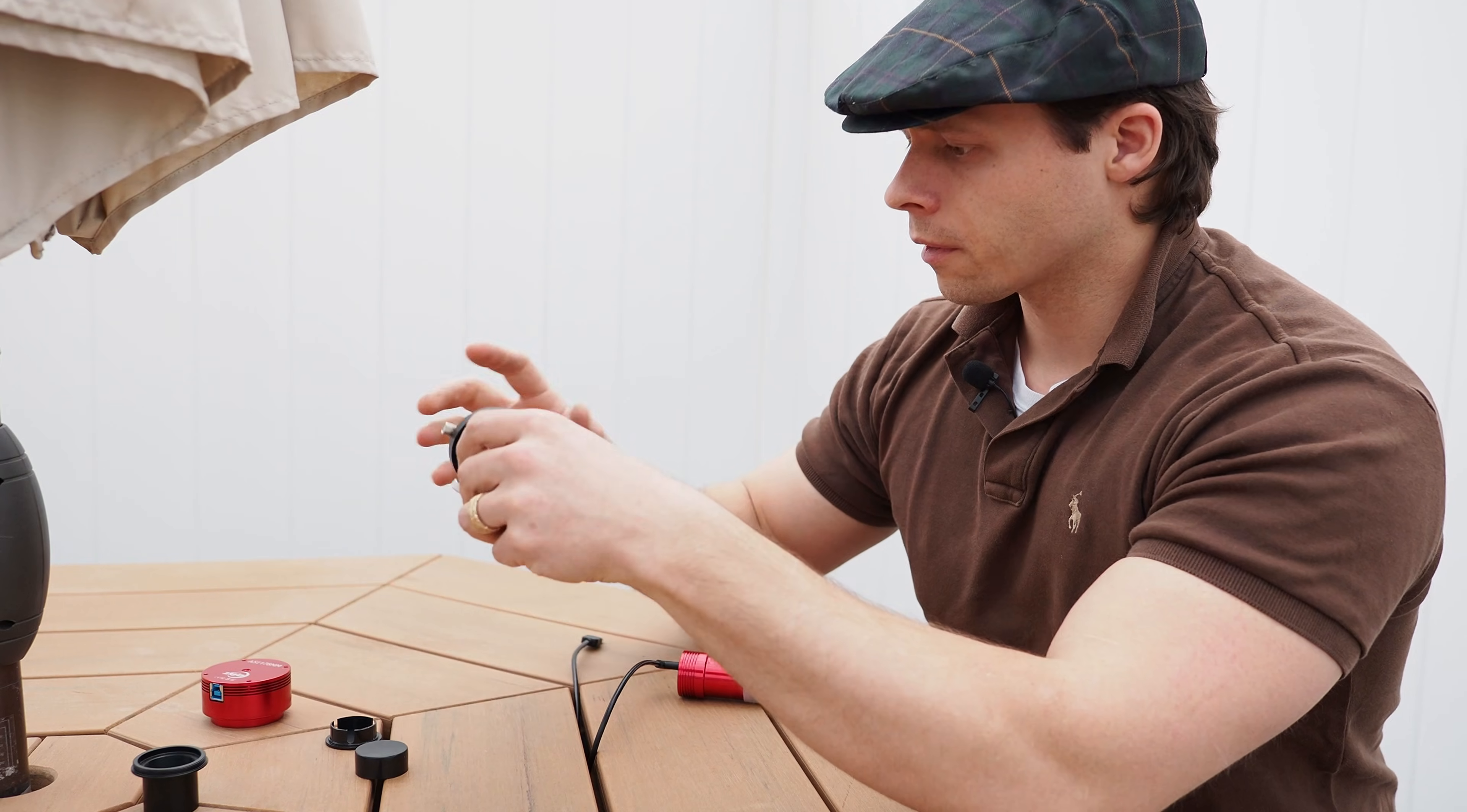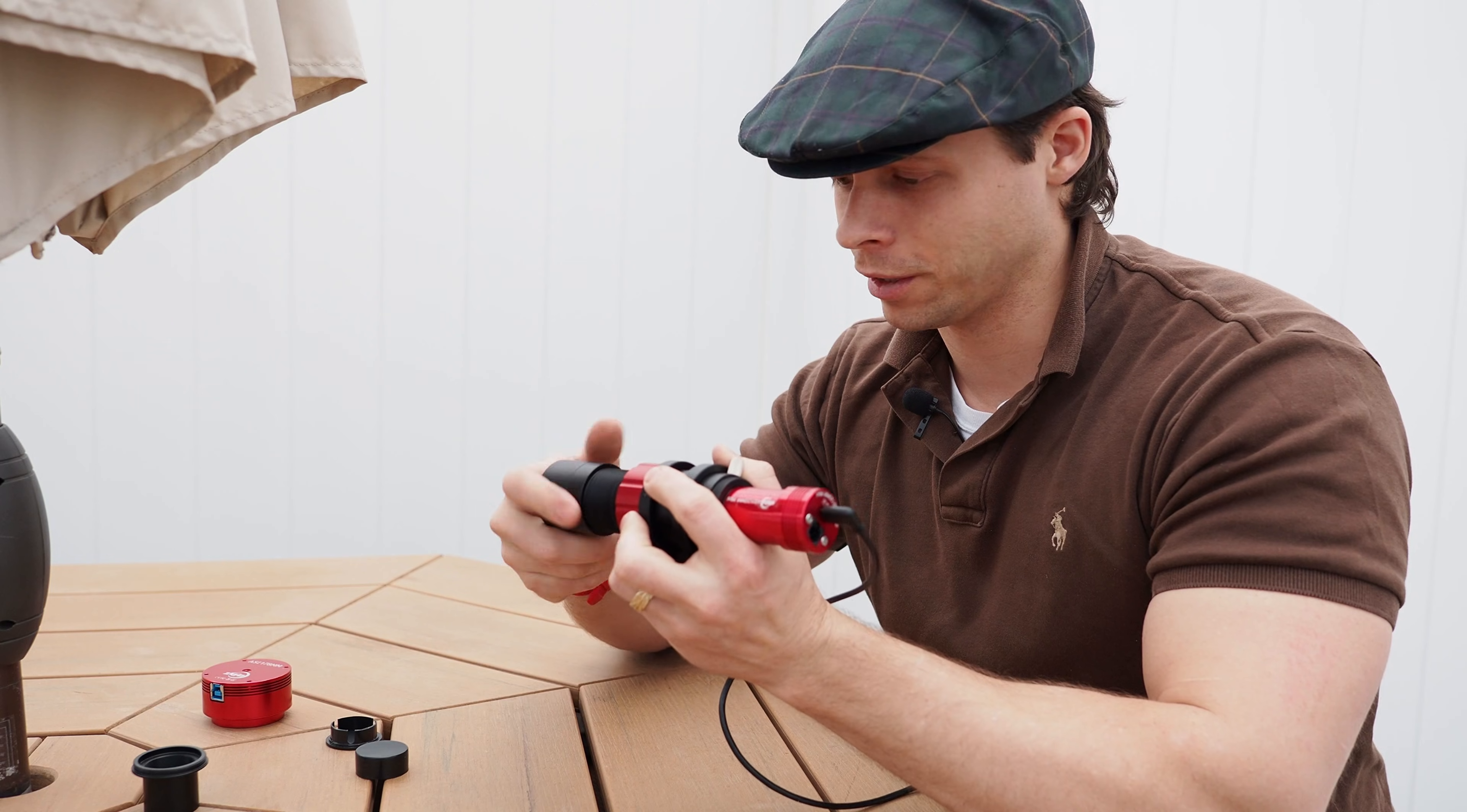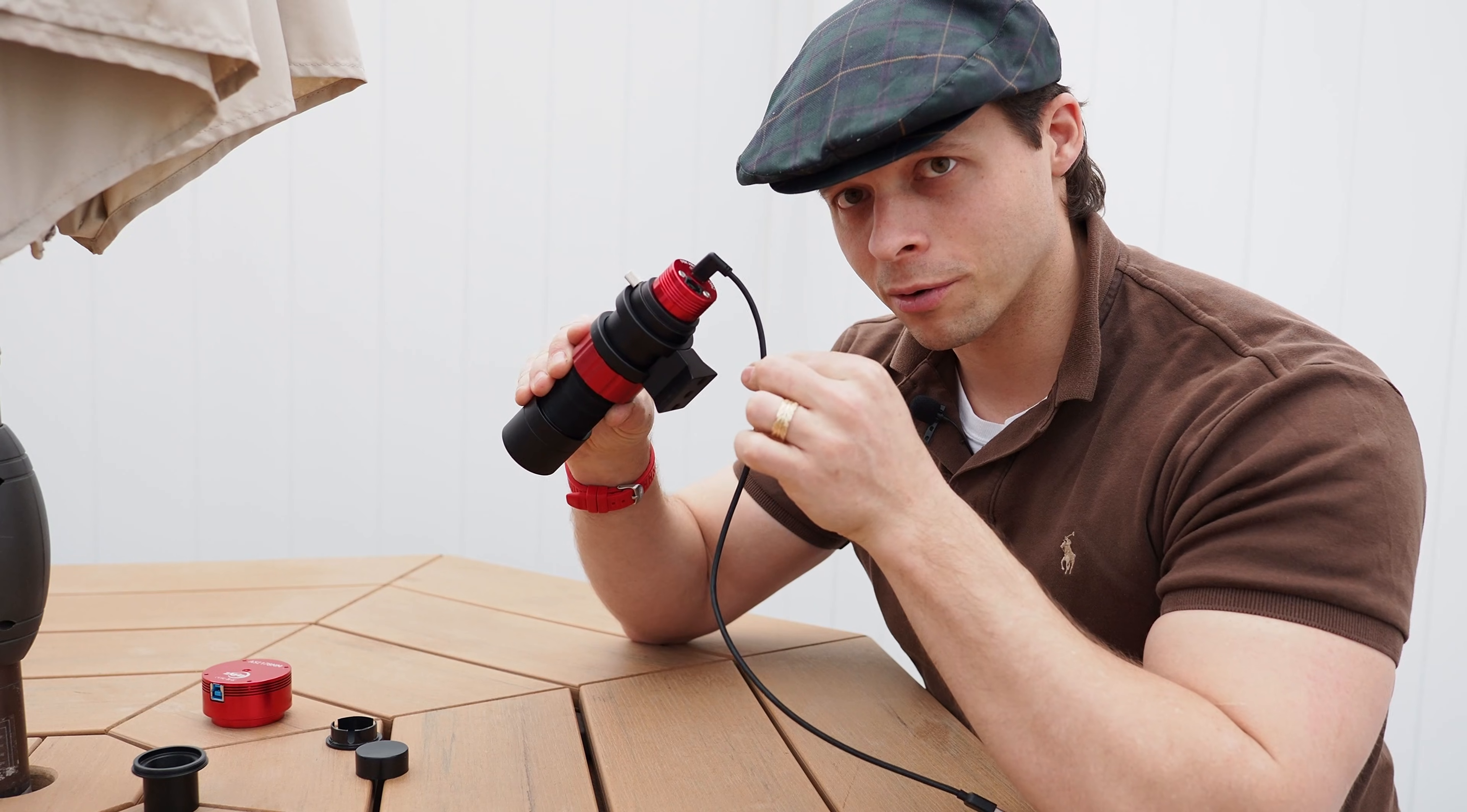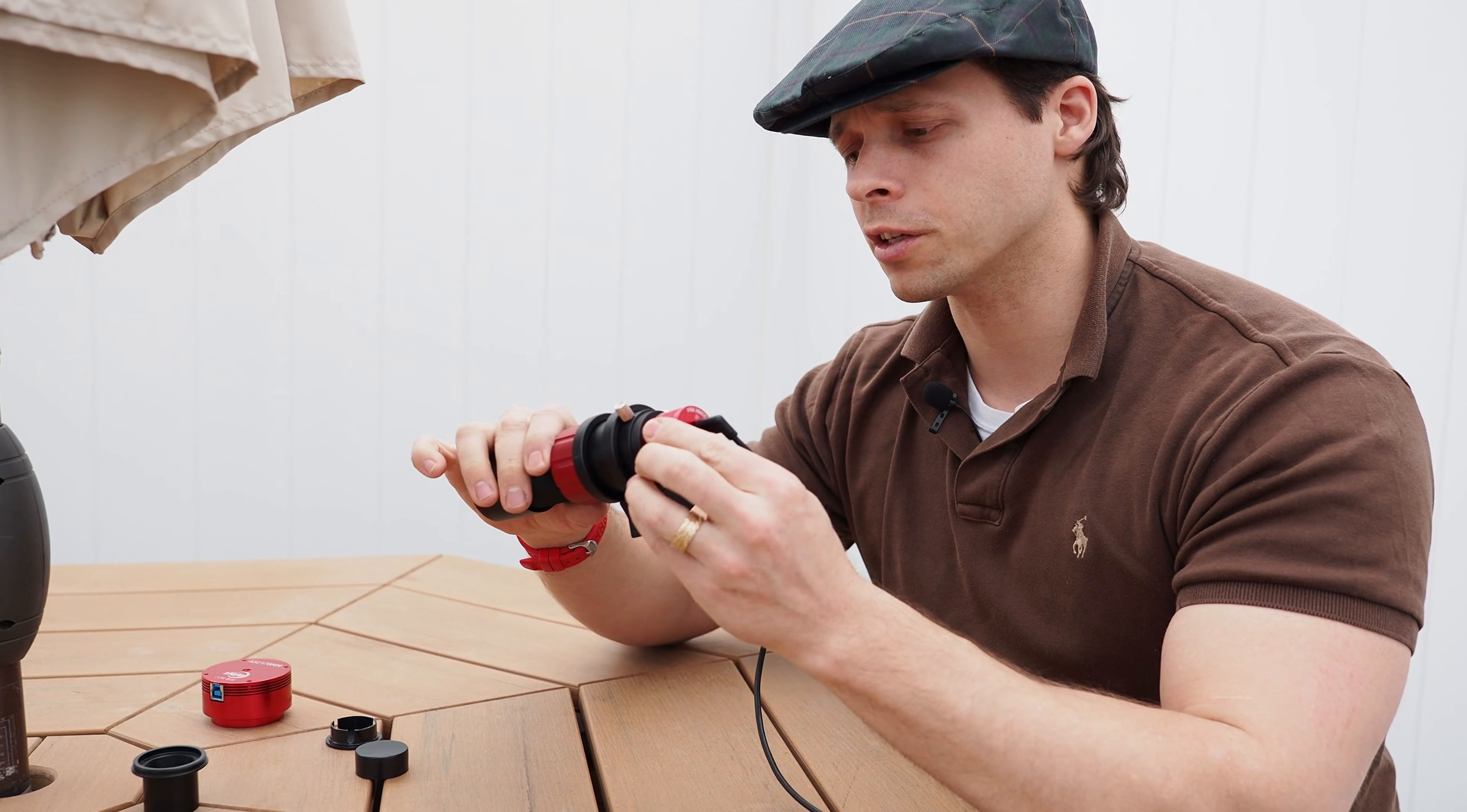Now if you have one of these types of cameras - this is a dedicated guide camera - you actually want to take this section right here and screw it all the way out as far as it will go. The reason for this is that you want this guy to be as far into the tube as you can get it. That's because this cord right here, if it were to tug on it or hang out, it could flex a little bit and that flexure could mess up your guide if the cord moves around or the weight shifts throughout the night as the scope turns.